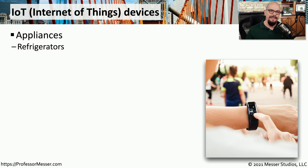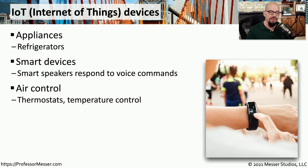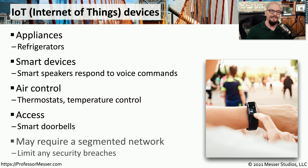Through the years, we've begun extending the capabilities of these network connections to devices that originally didn't have a network connection. These are Internet of Things devices, or IoT devices. You might have appliances such as refrigerators or speakers connecting to the network, usually over a wireless connection. In your home, you may even have thermostats, doorbells, or garage door openers that are IoT devices. Since these IoT devices could be a security risk, many organizations will segment all of these IoT devices onto their own networks, and at home you can provide this functionality through a guest network on your wireless router.